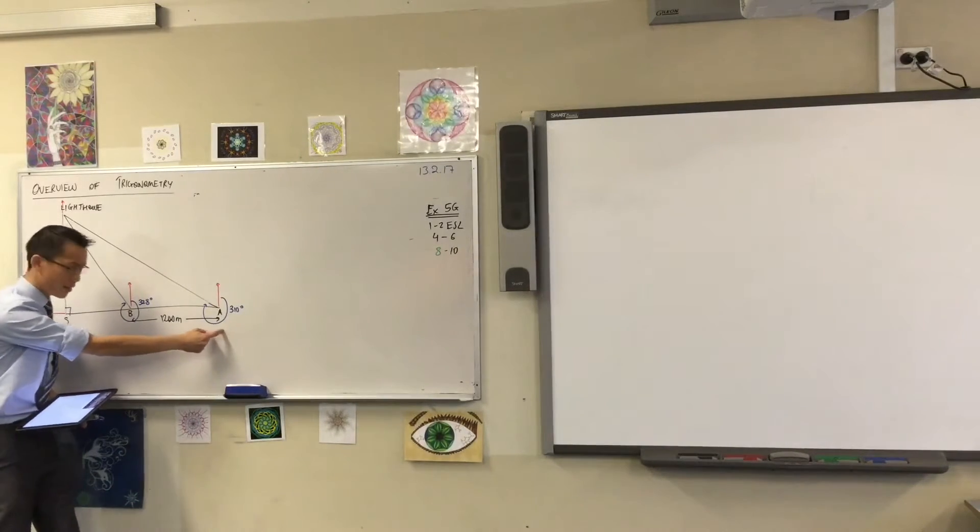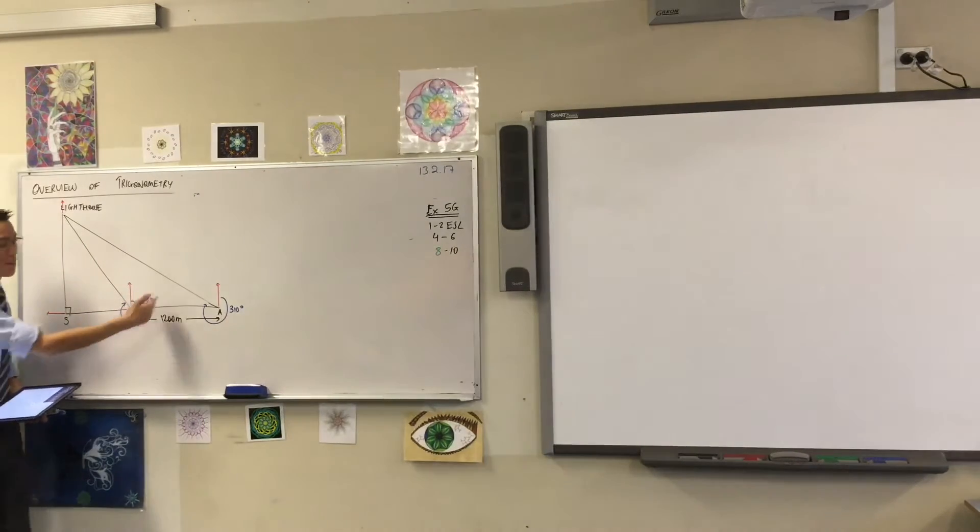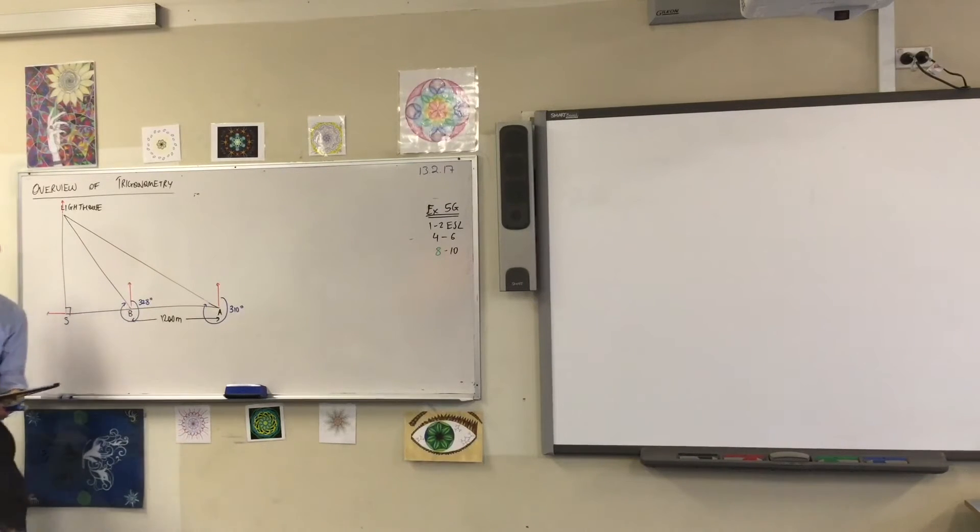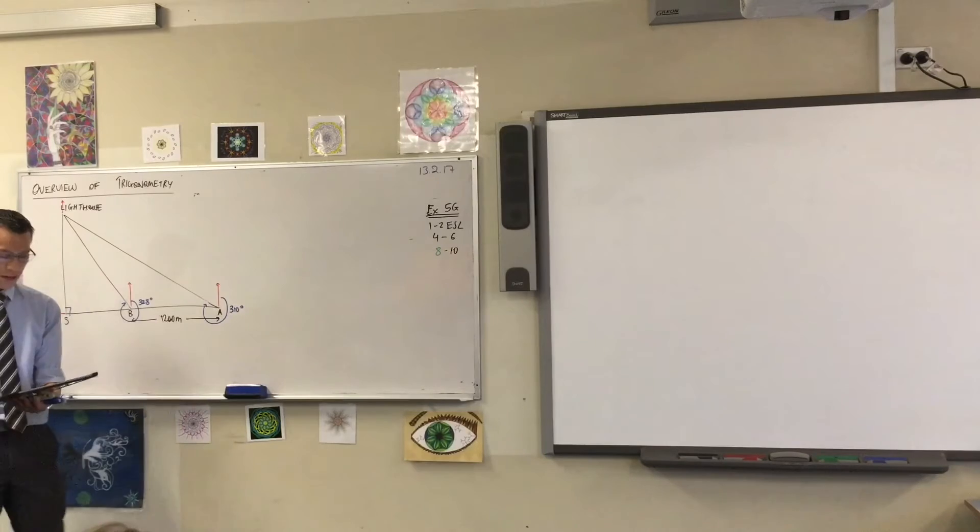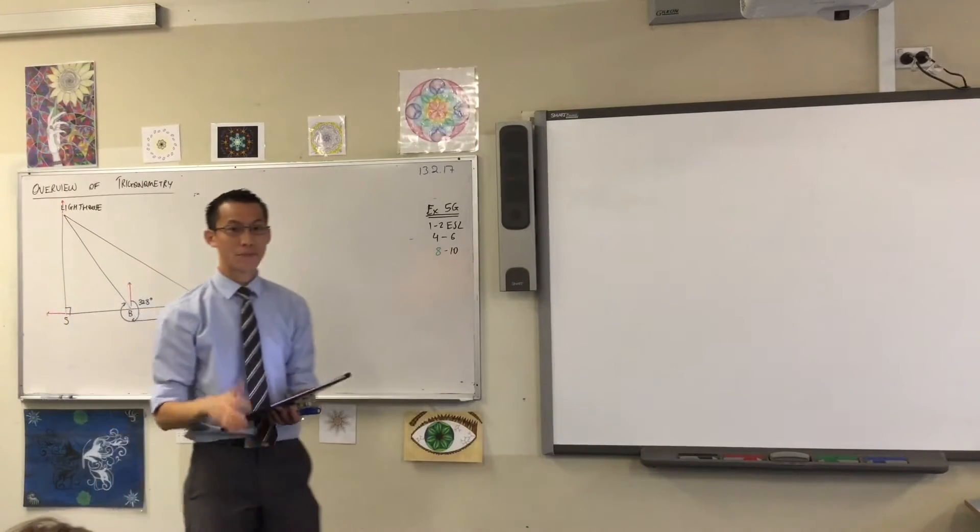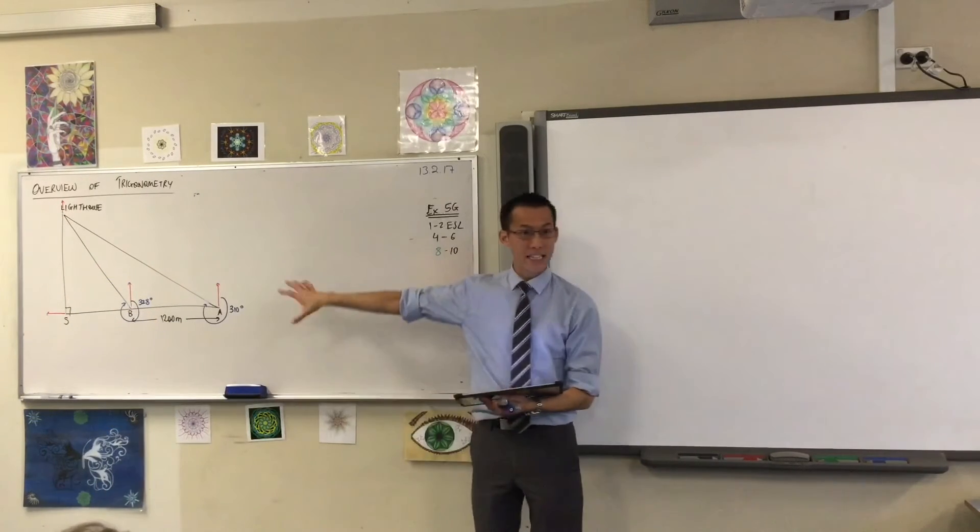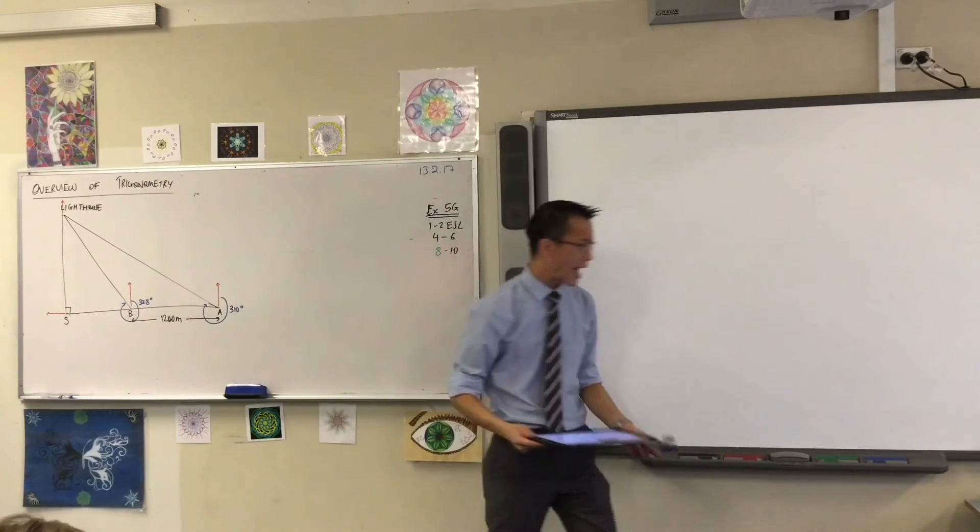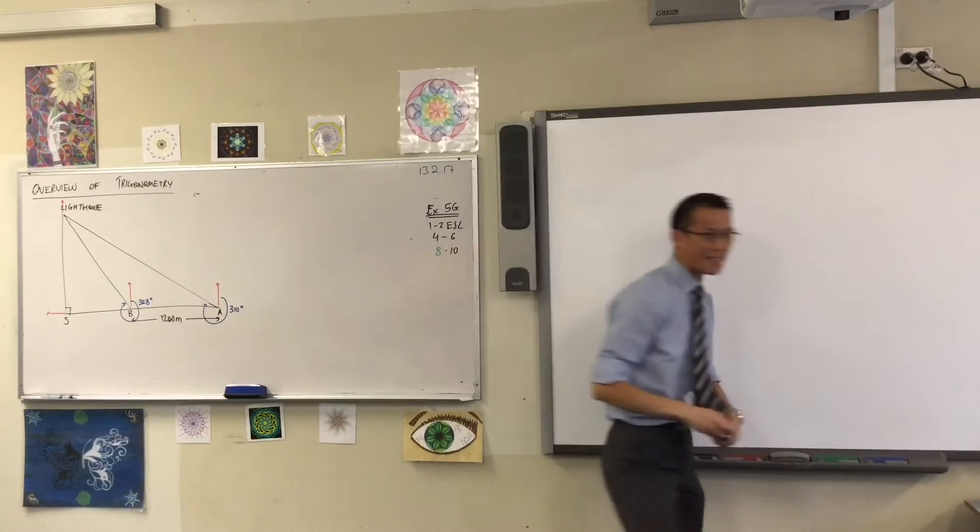The boat has traveled 1200 meters due west. Where is that on the diagram? It's from A to B. Right? So the boat started here, now it's over here, and then they take another bearing. The bearing of the lighthouse now is 328 degrees true. The diagram shows this information. Good. So we have a rough idea of what's going on. What are they asking us? First it says find ABL.